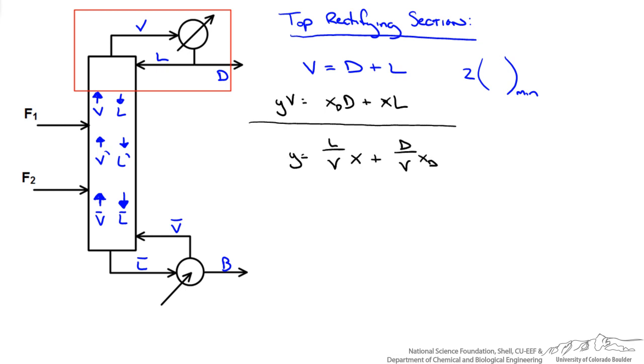As I mentioned our operating line is a combination of both the overall and component material balances. So you can see our slope is L over V. I apologize I rewrote this wrong over here, that should be L over V min. And we decided from our slope on our x equals y line that that slope was 0.32.